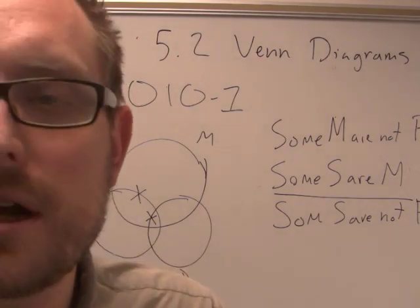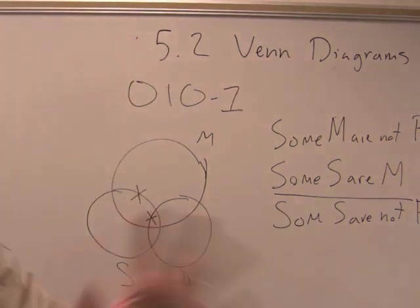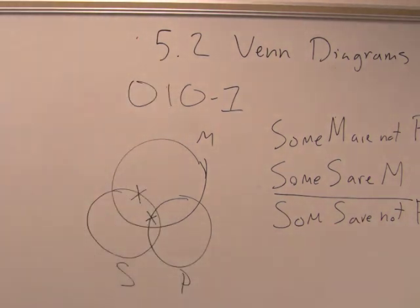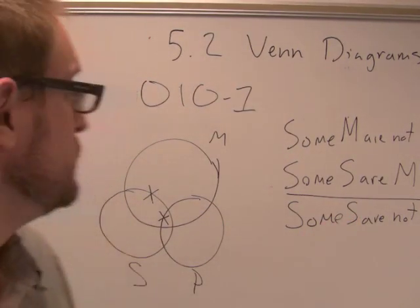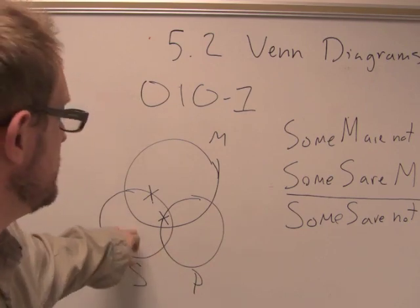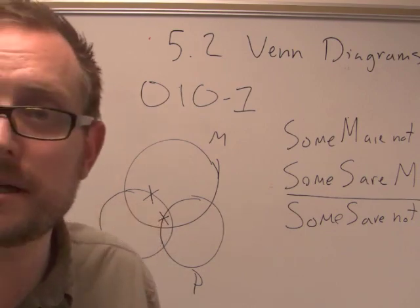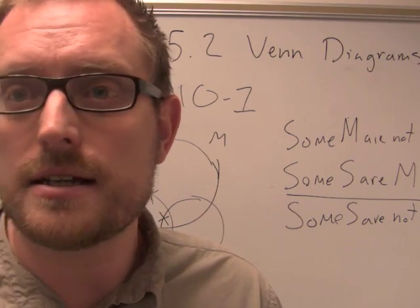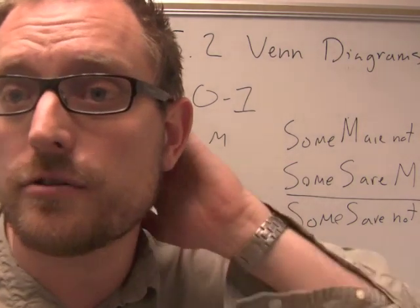So then the question is whether or not we can read off our conclusion in this diagram. We can't put any more marks on it. Those are the two marks we give. Some S's are not P. Can we read that argument? The argument is actually invalid, because we can't prove with certainty that some of the S's are not P's because we have one right there, and that may actually be a P. We don't know. So what we say is this argument form is invalid because the conclusion is undetermined logically.